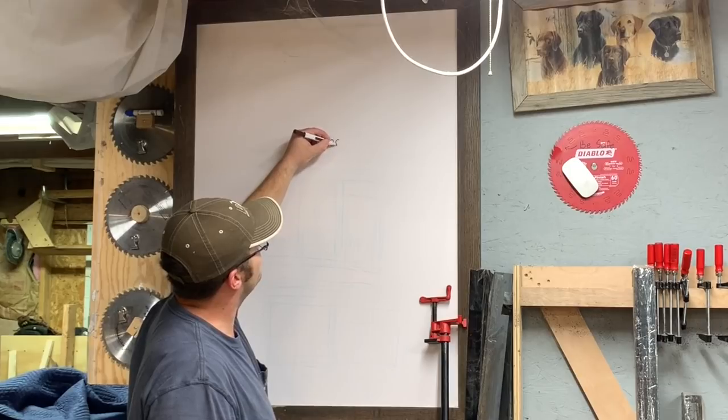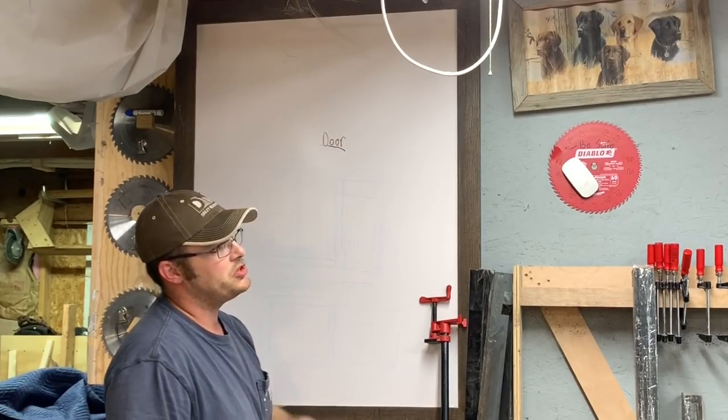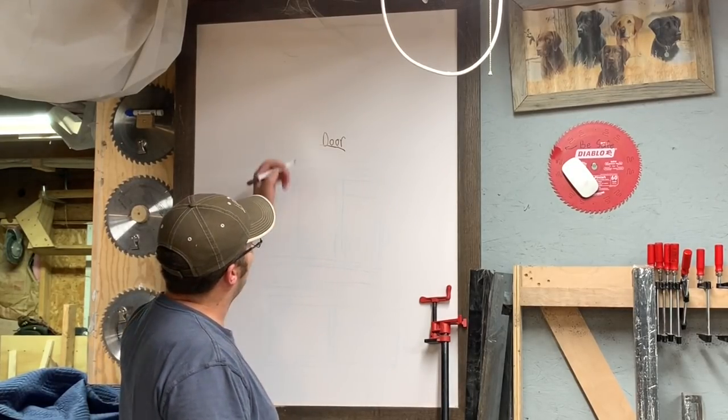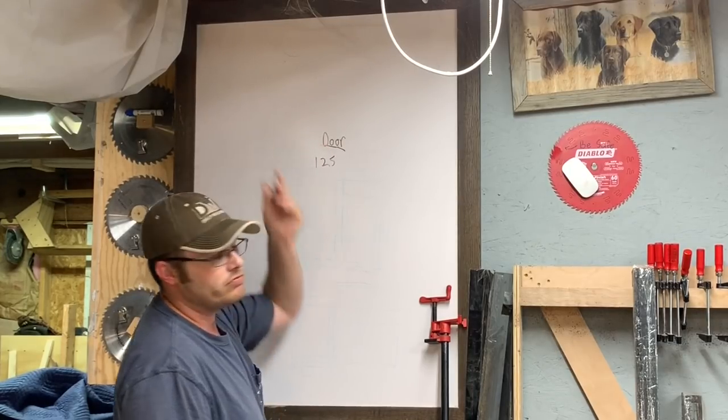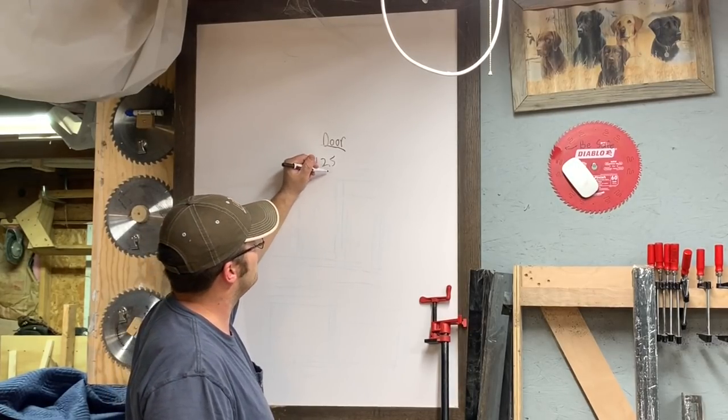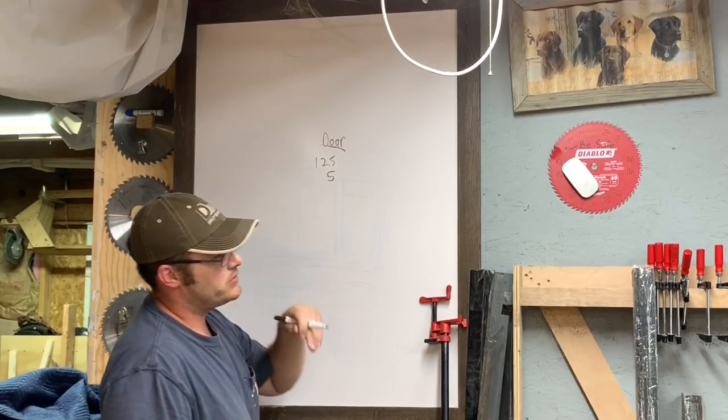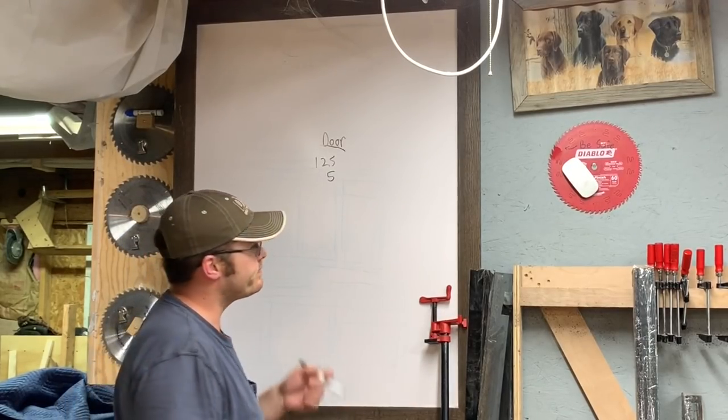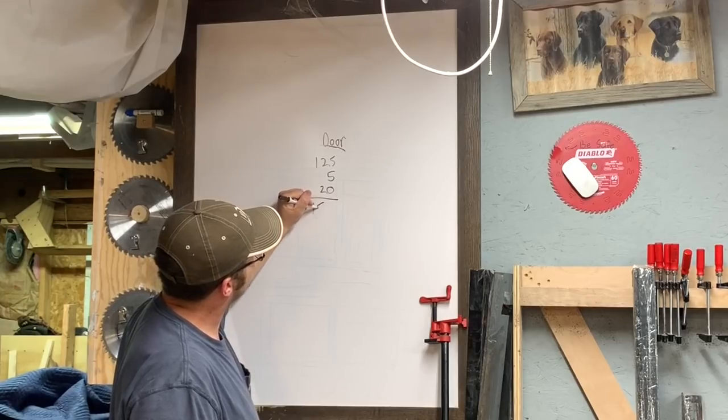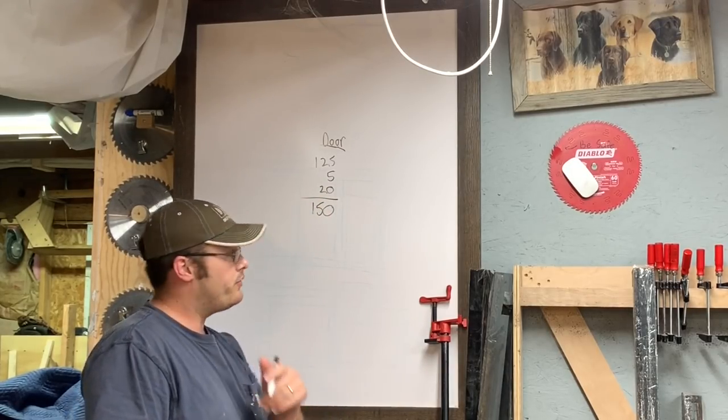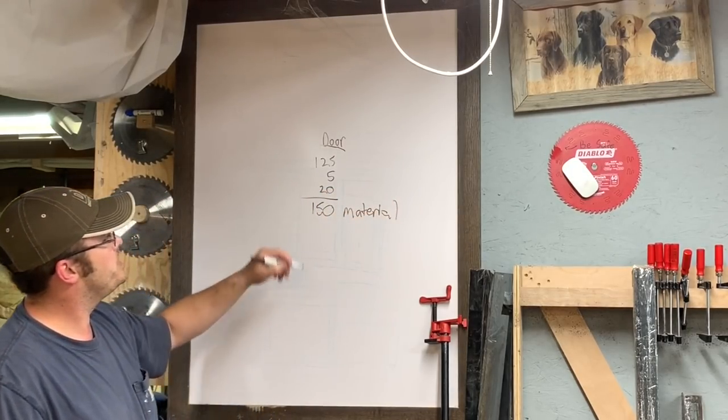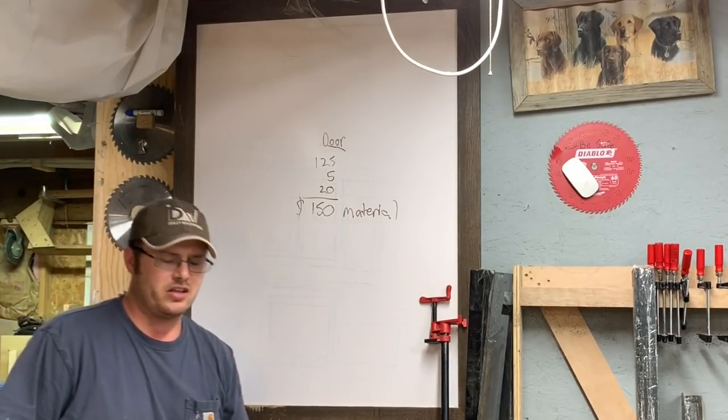We're gonna install an exterior door, a cheap steel solid door. In my area that's about $125. We're gonna have some spray foam, that costs about $5 a can. We've got some brick mold, say that's going to be about $20. So we're at $150 in materials.